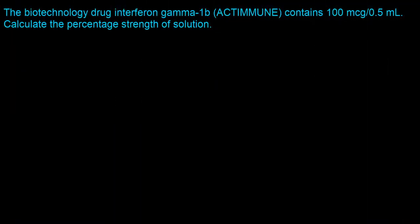The biotechnology drug interferon gamma-1b (Actimmune) contains 100 micrograms per 0.5 milliliters. We need to calculate the percentage strength of the solution. An important concept to understand is what percentage concentration actually means. When we talk about percentage concentration, you have a solute in a solvent, and it is defined as some amount in grams out of 100 milliliters.